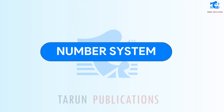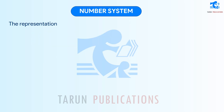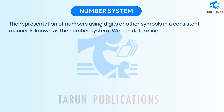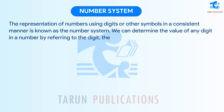Number system. The representation of numbers using digits or other symbols in a consistent manner is known as the number system. We can determine the value of any digit in a number by referring to the digit, the position of the digit, and the base of the number system.